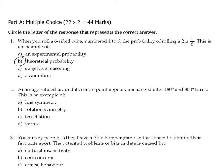Question 1: When you roll a six-sided cube, numbers 1 to 6, the probability of rolling a 2 is 1 over 6. This is an example of theoretical probability — the correct answer is B. We know the cube has six sides and to get one of them it's 1 out of 6. We don't conduct any experiment here, so it's not experimental probability.